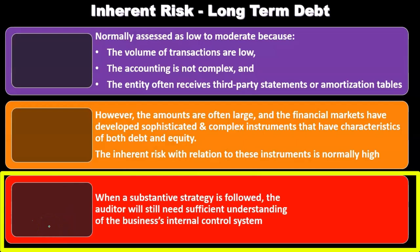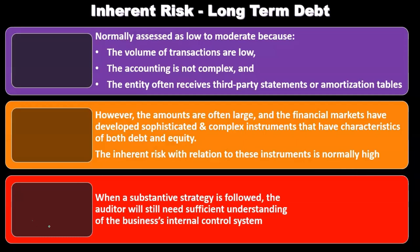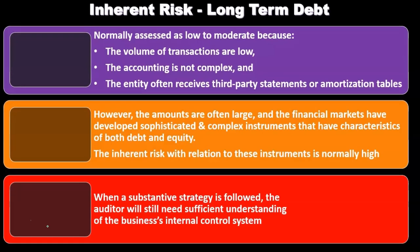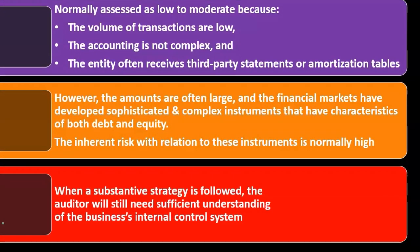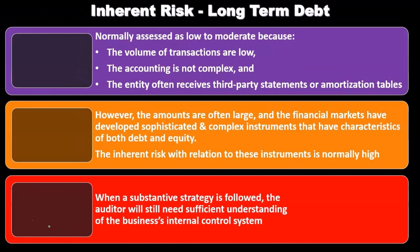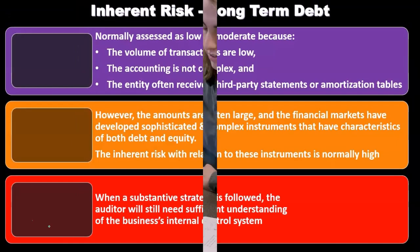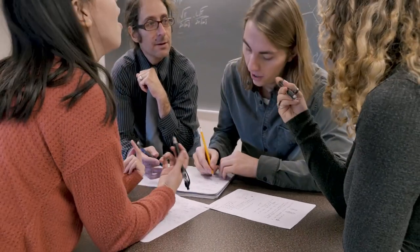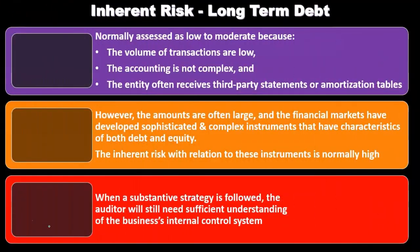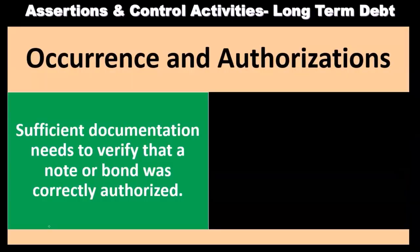When a substantive strategy is followed, the auditor will still need sufficient understanding of the business's internal control system. Although we're probably going to depend on a substantive strategy, you might wonder why we're even thinking about inherent risk or control risk — why not just skip them and go straight to substantive testing? But that's not necessarily the case. We want to get an understanding of the inherent risks and the controls in and of themselves as part of the audit evidence, even if we plan on taking more of a substantive test procedure.